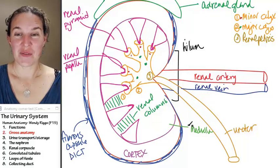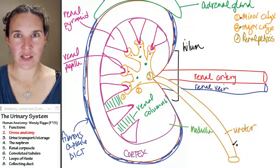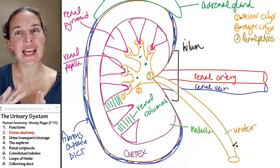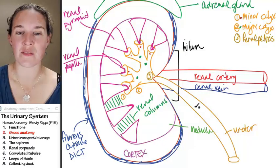Now, the pee is going to get into the ureter. The ureter, we know already, is headed to the bladder. So let's look at that whole aspect of the urinary system.